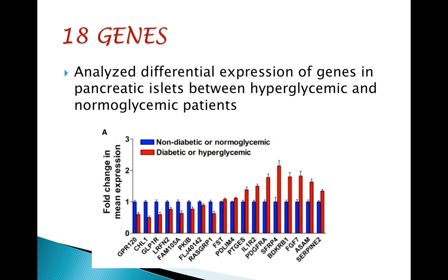Finally, they observed genes that were differentially expressed in donors with non-diabetes and with hyperglycemia, compared with normoglycemic donors. Of them, 18 genes — shown in the top graph — were differentially expressed in both comparisons: donors with hyperglycemia versus normal glycemia, and donors with type 2 diabetes versus non-diabetic donors, and were included in the subsequent ranking.